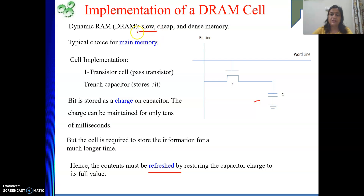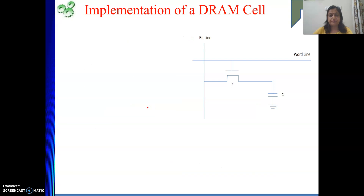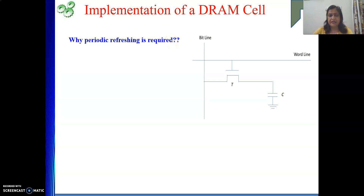So, three characteristics we have seen. Being slow is on the negative side. Being cheaper is very good. Denser memory is also good, because we want to design a bigger size memory but have a limited space — within that, if we can accommodate more number of cells, then it is a benefit. How the information is stored? In the form of a charge. Next, we will again discuss why periodic refreshing is required.